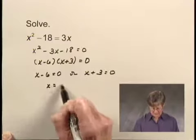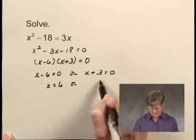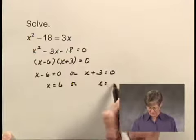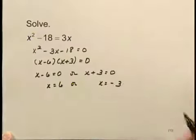If I add 6 on both sides here, I get x equals 6. And if I subtract 3 on both sides here, I get x equals negative 3.